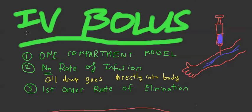IV bolus — what is IV bolus? IV bolus is pretty much this: I drew a diagram. So if you load up a syringe with a drug and you inject it directly into someone's veins, that's what IV bolus is. It's not an infusion, it's not over time, it's not slow, it's fast. All the drug — so it's the direct opposite of the infusion. It's fast, going straight into the veins, distributing all throughout the body.